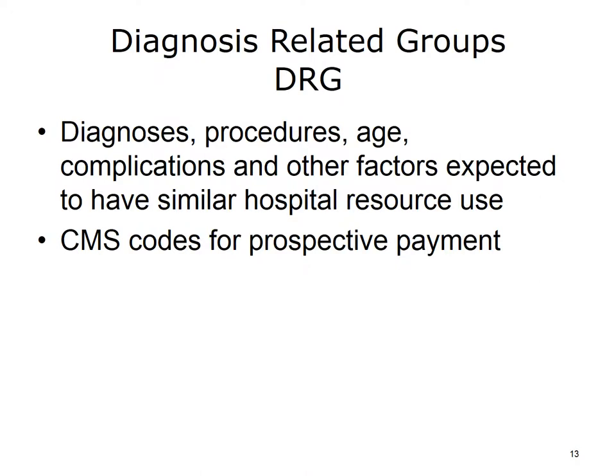Diagnosis-related groups (DRG codes) are used to group hospital cases into approximately 500 diagnosis-related groups. Each group includes diagnoses, procedures, and other factors: age, severity, complications, and comorbidities. These codes are grouped based on the expectation that a group of items would use similar hospital resources. DRGs have been adopted by most payers and have been used in other countries.